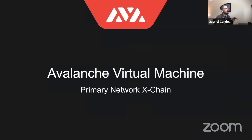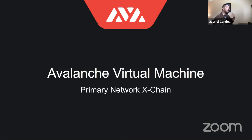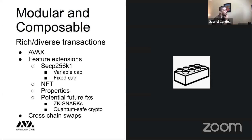A big design pattern of our entire system is that it's very modular and composable. You can launch your own subnets, launch your own virtual machines on those subnets, and have your own validator rule sets. Even within the AVM it's very modular and composable — you can think of it like a multi-dimensional set of Legos. Once you develop an intuition for how the pieces fit together, you're empowered to create rich and diverse transactions.